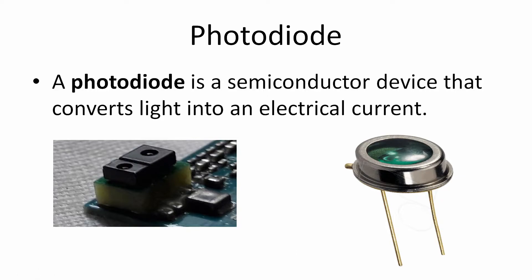Photodiodes are a type of diode that act as a semiconductor — they convert light into electrical current. The more light there is, the different the flow of electricity through the component, which lets you determine how much light is present. On your phone, there's a little photodiode that detects light levels to automatically change the brightness of your screen.